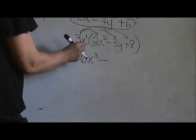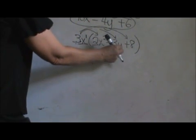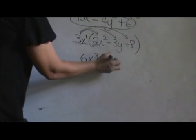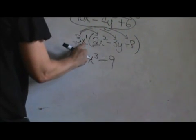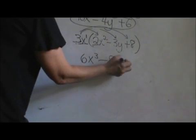Minus. Now we're going to take the 3x times the 3y. 3 times 3 is 9. x times y just gives us an xy.